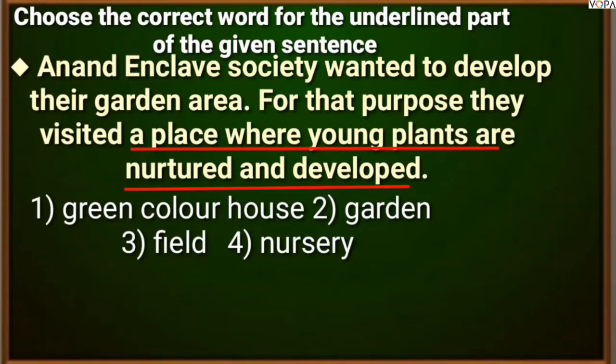Anan Enclave Society wanted to develop their garden area — they wanted to expand their garden. For that purpose, they visited a place where young plants are nurtured and developed — a place where small plants are prepared, grown, and cared for. So the correct one-word substitute is Nursery.